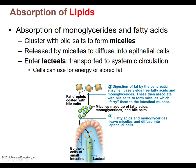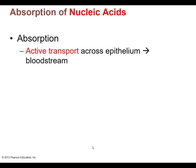For nucleic acid absorption: since we eat DNA and break it down, the resulting small molecules — phosphate groups, bases, and sugars — are absorbed by active transport. We simply pump those small molecules across the epithelium into the bloodstream. Pretty straightforward.